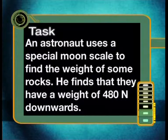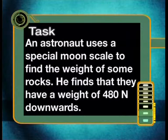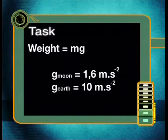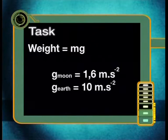Now, here's your task for today. An astronaut uses a special moon scale to find the weight of some rocks. He finds that they have a weight of 480 newtons downwards. Find the mass of these moon rocks and also their weight on earth. Here is some useful data to help you complete the task. In the next lesson of this series, we'll find out about work done when a force acts on an object and how gravitational potential energy is transferred to an object when its height above the earth's surface increases. Goodbye.